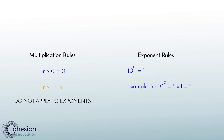For example, when working with the exponent 10 to the 0 power, it is the same as multiplying by 1 because it does not represent any power of 10. When working with the first power of 10, it is the same as multiplying by 10 because it represents one 10.